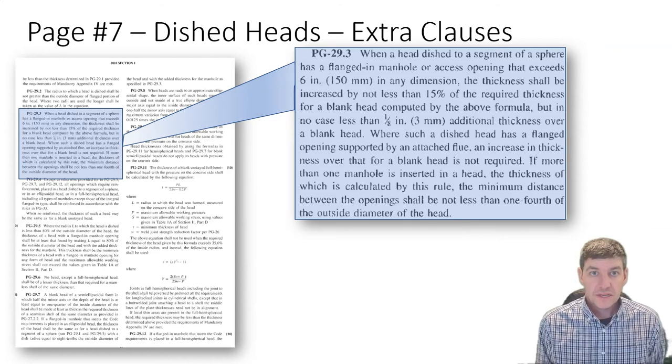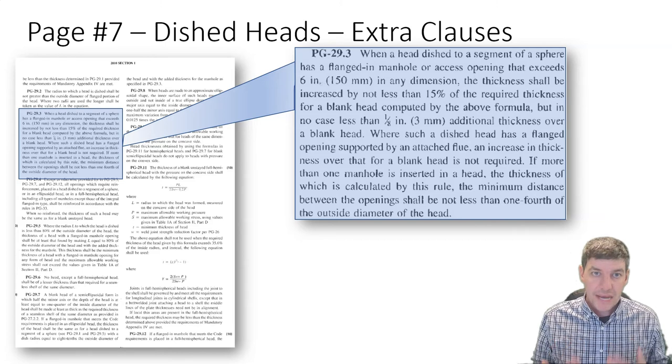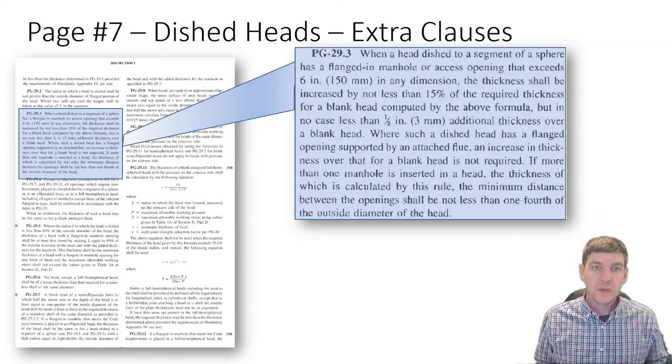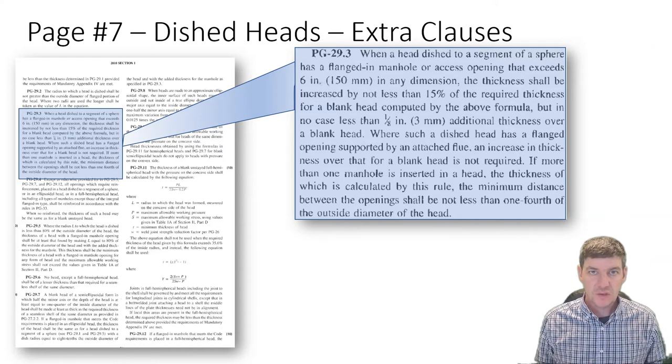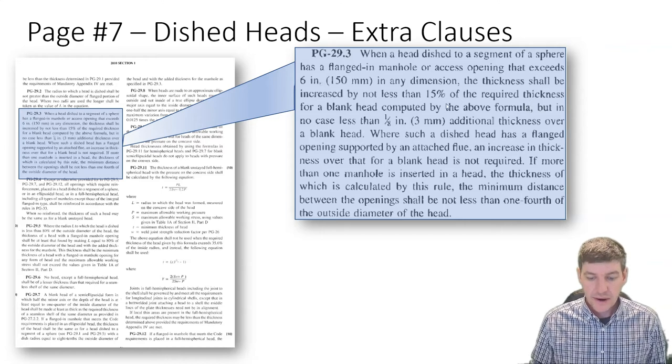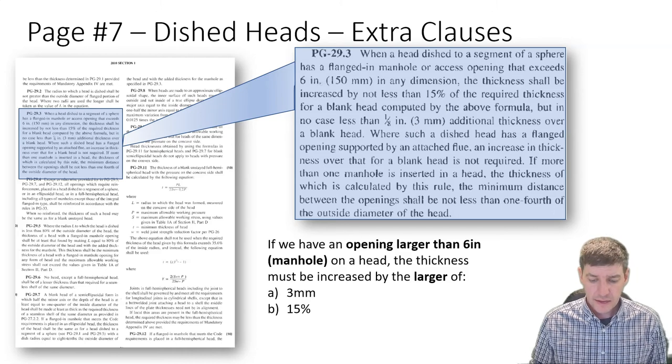What this says is that if we put a manhole into a head or other access opening, we're going to weaken the head, so we have to add some extra thickness. We have two different ways to calculate that - we either add 15% or we add 3 millimeters.